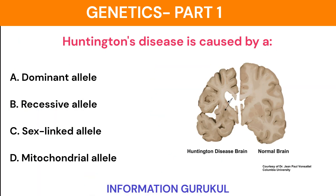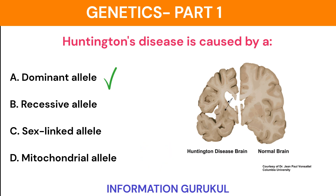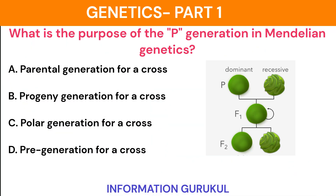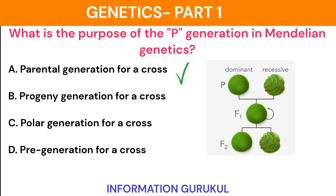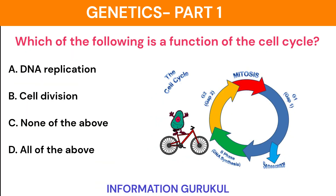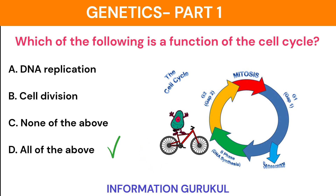Huntington's disease is caused by a dominant mutation. What is the purpose of the P generation in Mendelian genetics? Parental generation for a cross. Which of the following is a function of the cell cycle? All of the above.